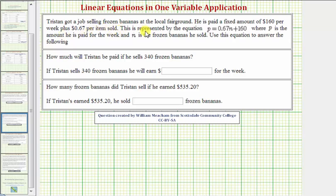Tristan gets a job selling frozen bananas at a local fairground. He is paid a fixed amount of $160 per week plus 67 cents per item sold. This is represented by the equation P = 0.67N + 160, where P is the amount he is paid for the week and N is the number of frozen bananas sold.